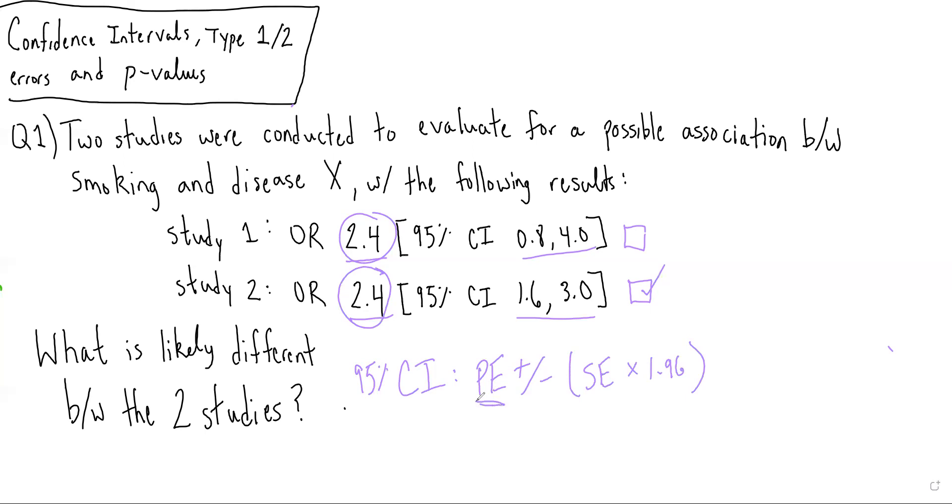We know the point estimate is the same between the two studies. This 1.96 is static. So given that study two had a more narrow confidence interval, we would expect study two to have a smaller standard error. In order for study two to have a smaller standard error, assuming somewhat equal standard deviations, it would need to have a higher sample size.